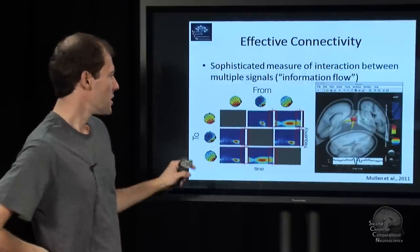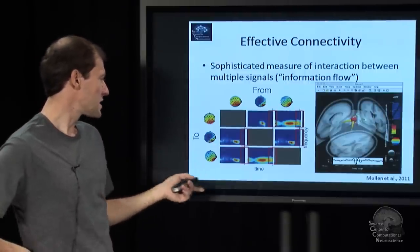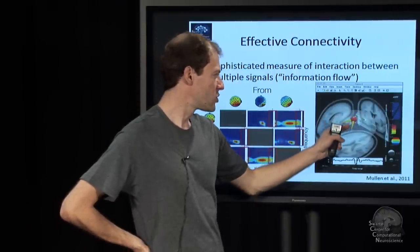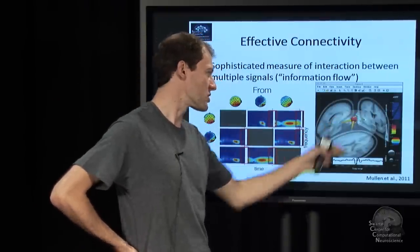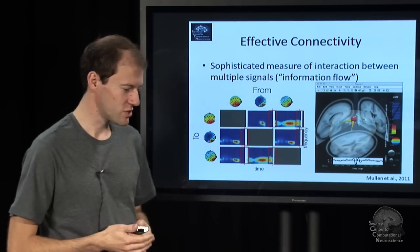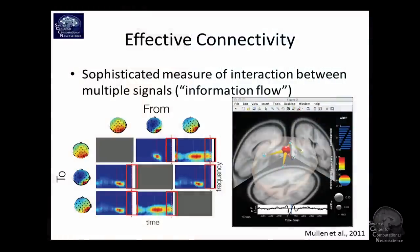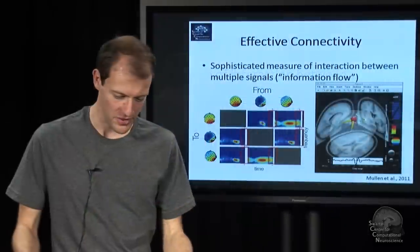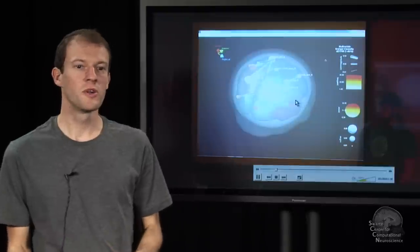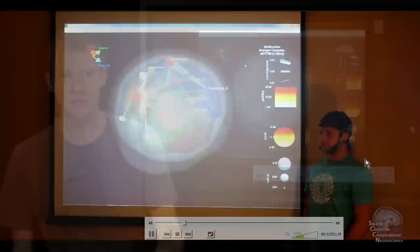You can even look at basically directed, we call it information flow or connectivity. This is pictures from Tim Mullen's toolbox SIFT, which is also being developed at Swartz Center. You see things like one source here kind of driving a bunch of other sources in some statistical sense. It's a complicated matter. There'll be lectures on that later on. I won't dive into too much details here, but it's an interesting, very complex and structured phenomenon. I also have a little video on that to show you.